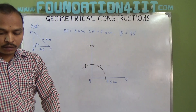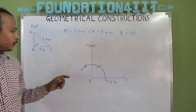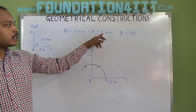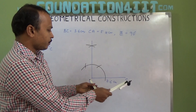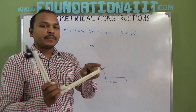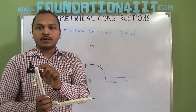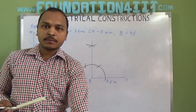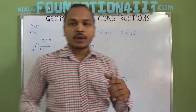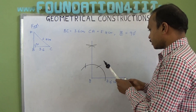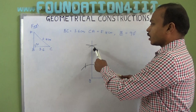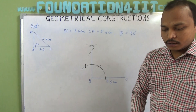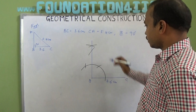Extend this line from B. Now, point A is somewhere on this line, but we don't know the distance B to A. However, we know C to A is 5.4 centimeters. So take 5.4 centimeters on the scale — place it at zero and mark 5.4 centimeters. From point C, draw an arc of 5.4 centimeters. Draw the arc so that it touches the previous line. Where it touches, that is point A.